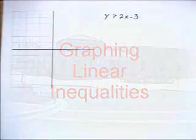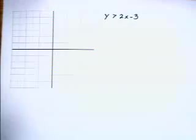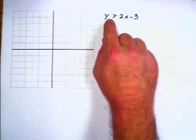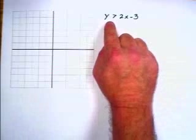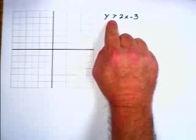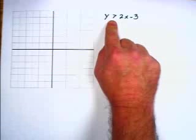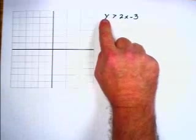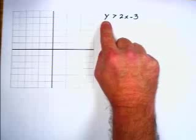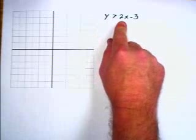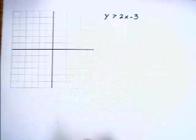Graphing Linear Inequalities. We're going to consider this inequality — it's like an equation except instead of an equal sign it has a greater than sign. This is not an equal sign because it says that y is not equal to 2x minus 3; it's greater than.